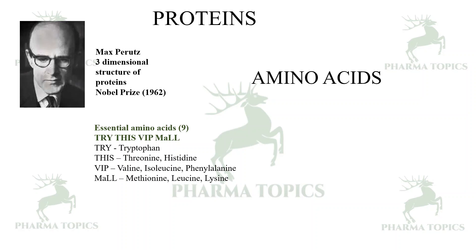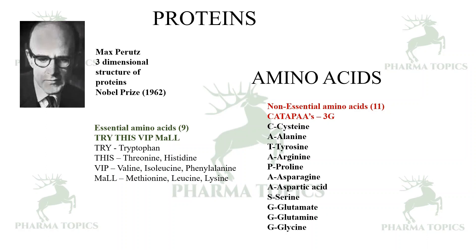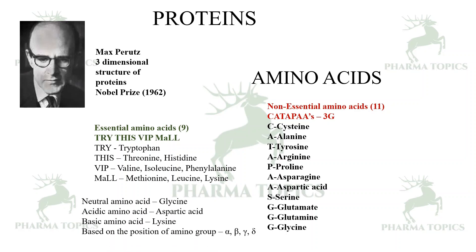'VIP' stands for valine, isoleucine, and phenylalanine; 'Mall' for methionine, leucine, and lysine. For the 11 non-essential amino acids, remember: 'Kattappa was having — we killed Bahubali because Bahubali had 3G mobile' — where C is cysteine, A is alanine, T is tyrosine, A is arginine, P is proline, W is asparagine and aspartic acid, S is serine, and 3G represents glutamate, glutamine, and glycine.